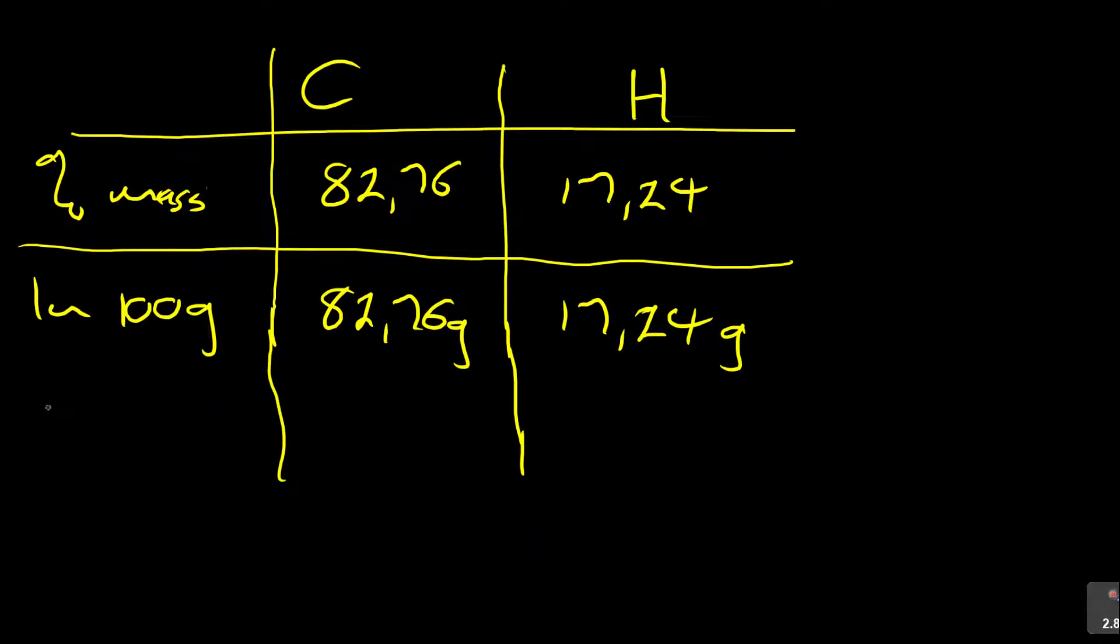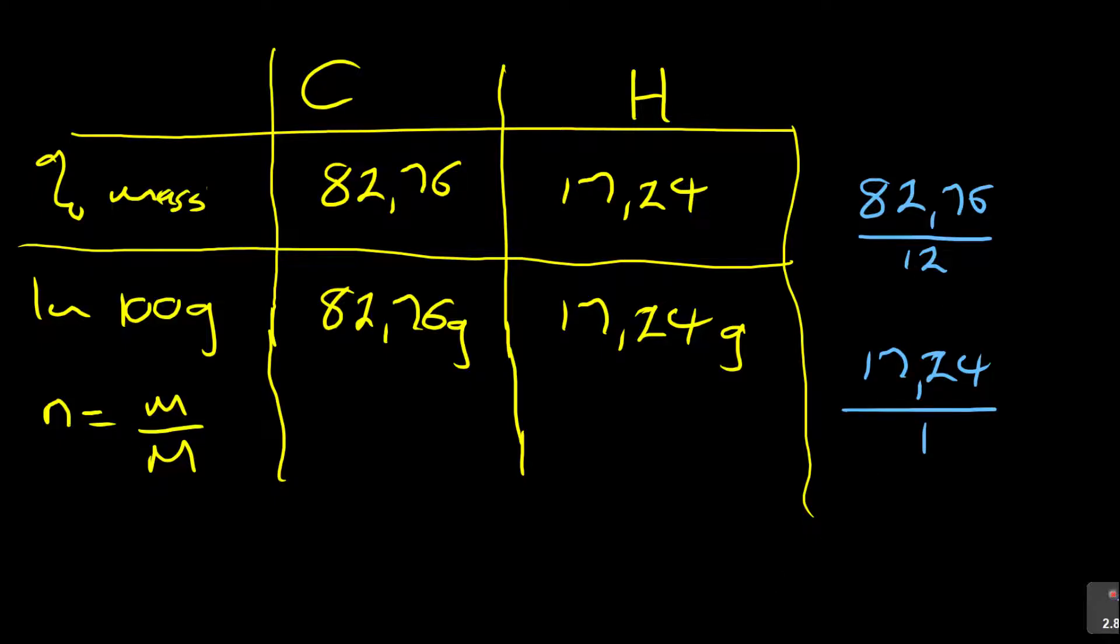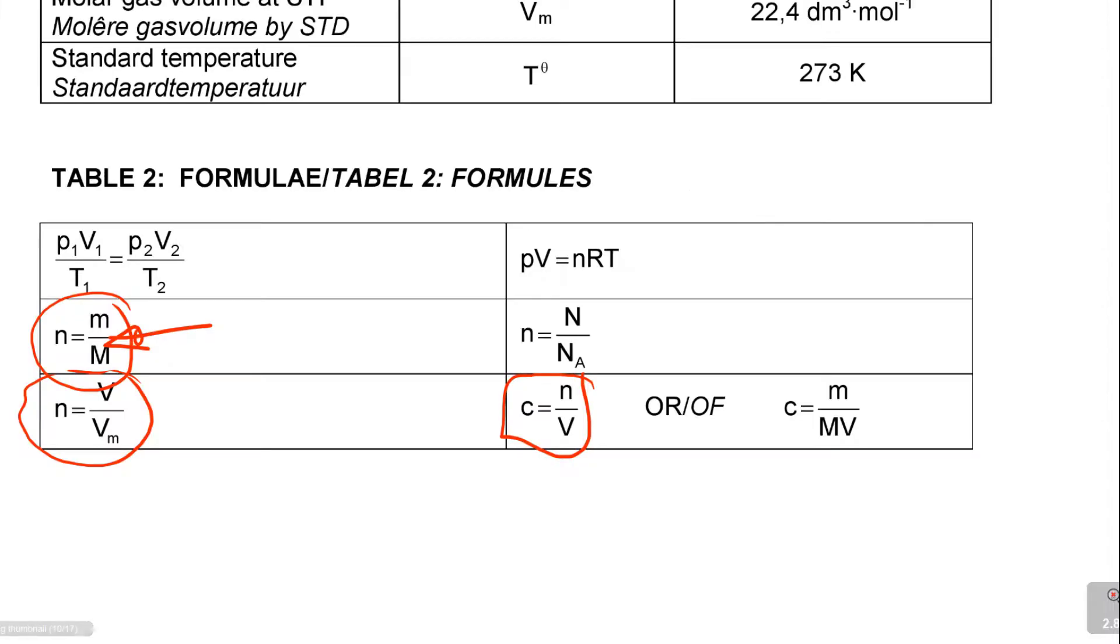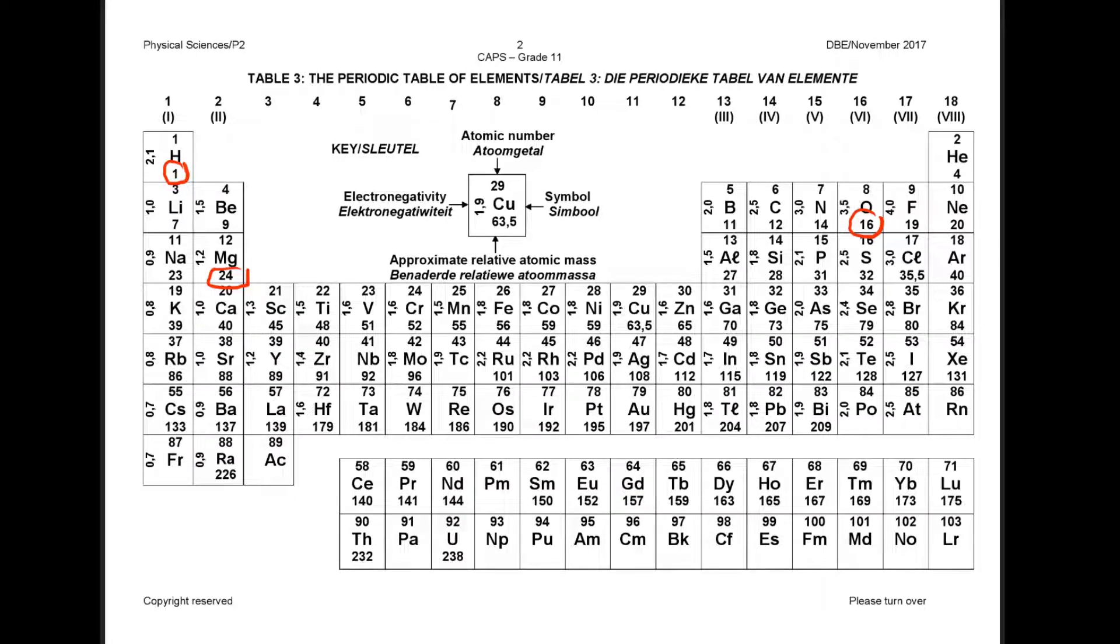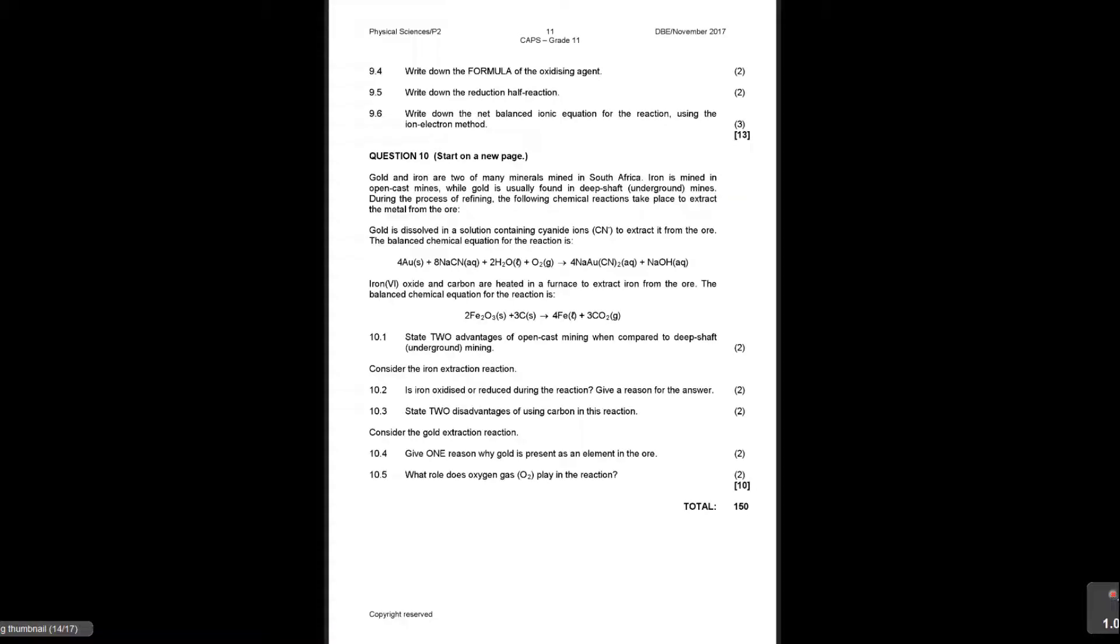Then after that, you have to calculate the moles. And remember moles is M over big M. So for carbon it will be 82.76 over 12. For hydrogen, it's 17.24 over 1. Where do I get the 12? I'm getting the 12 from the periodic table. Remember carbon is 12. You see that? I'm getting from that. The relative atomic mass of carbon is 12.